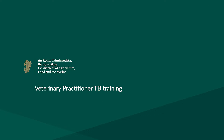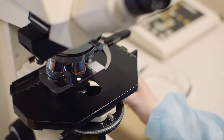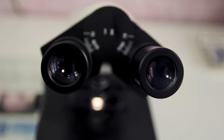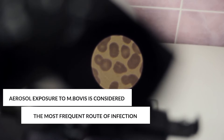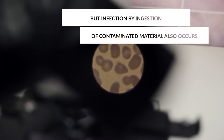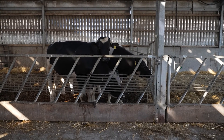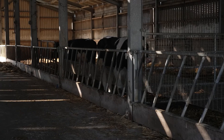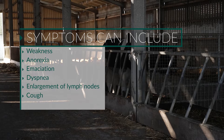Bovine tuberculosis is a chronic bacterial disease of animals and humans caused by Mycobacterium bovis. In a large number of countries, bovine TB is a major infectious disease among cattle, other domesticated animals, and certain wildlife populations. Transmission to humans constitutes a public health problem. Aerosol exposure to M. bovis is considered the most frequent route of infection in cattle, but infection by ingestion of contaminated material also occurs. Infection is often subclinical; when present, clinical signs include weakness, anorexia, emaciation, dyspnea, enlargement of lymph nodes, and cough, particularly with advanced TB.